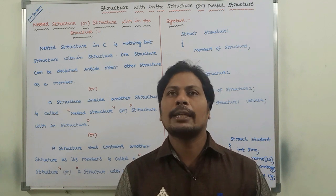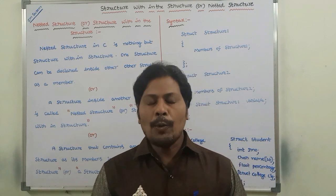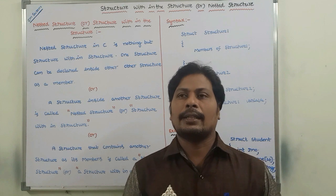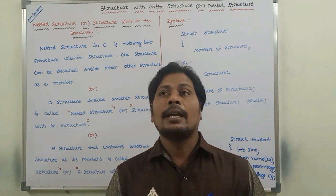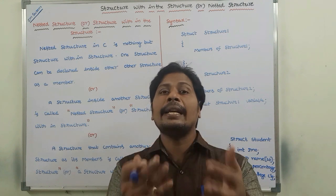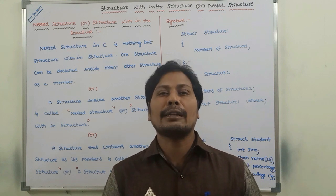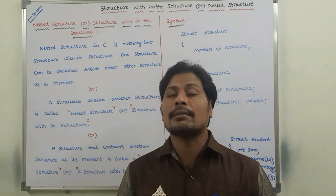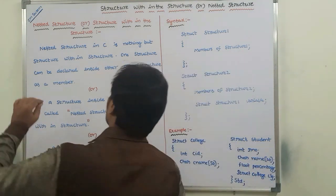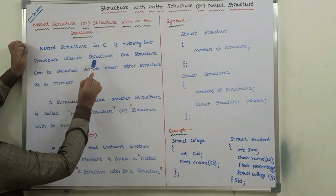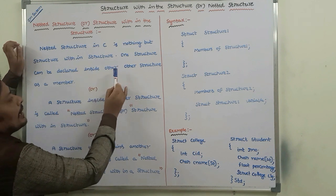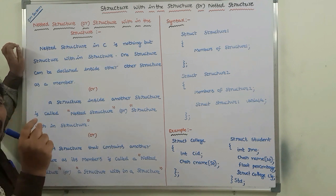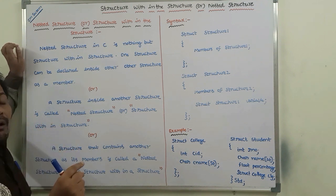It is one of the most important concepts in C programming. Now we can go for the definition. What is a nested structure? A structure within a structure is called a nested structure. A structure can be declared inside another structure as a data member — this is called a nested structure or a structure within the structure.